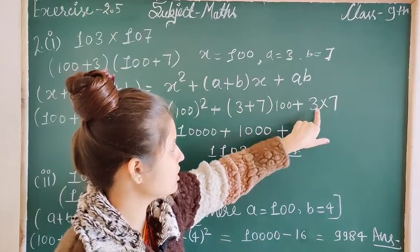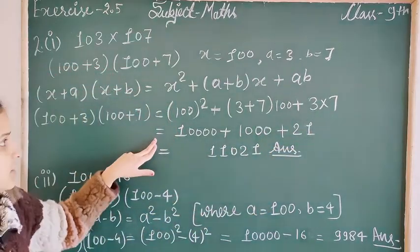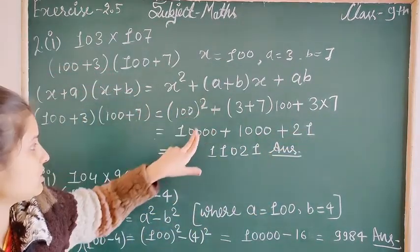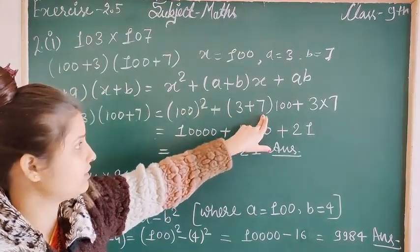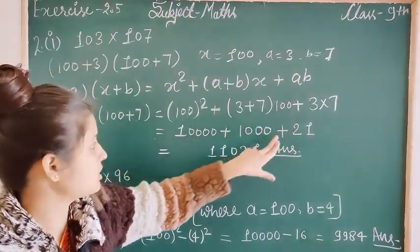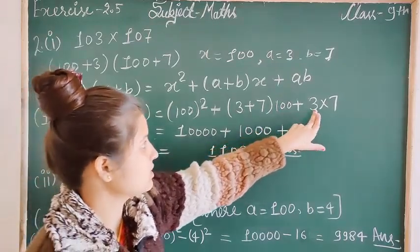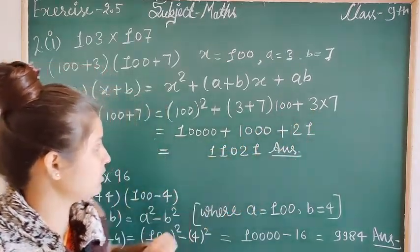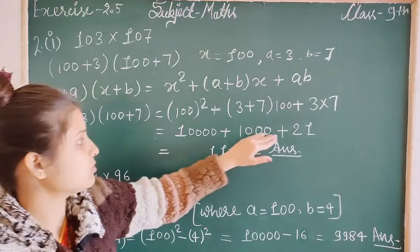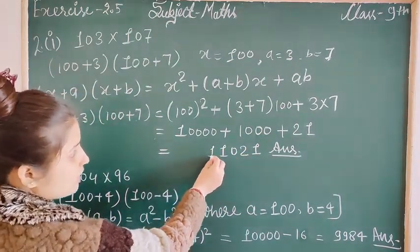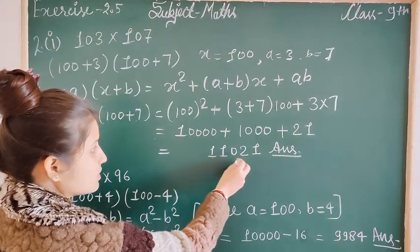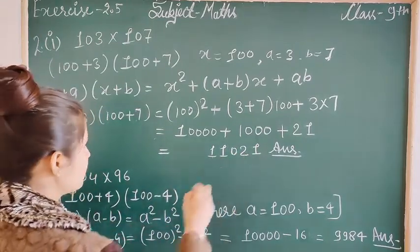This equals 100², which is 10,000, plus (3+7)×100 which is 1,000, plus 3×7 which is 21. Adding these together: 10,000 + 1,000 + 21 = 11,021. This is the answer.